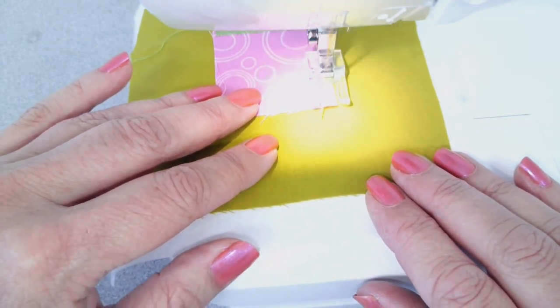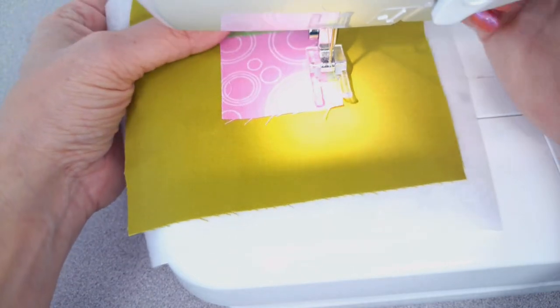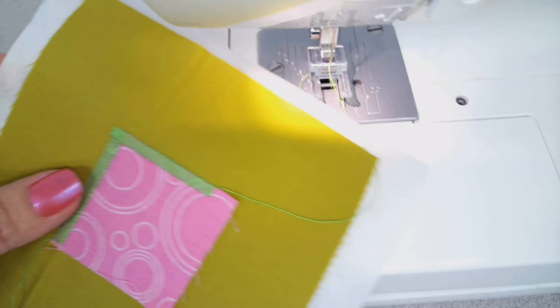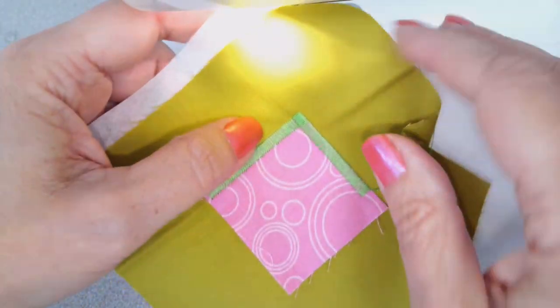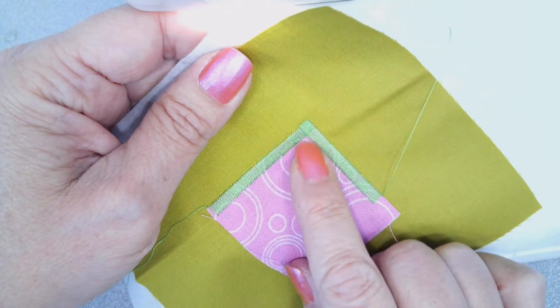Now the size of your applique is going to determine the stitch width that you might like. So let me bring this around so you can see. We've got a nice square corner on our applique there.